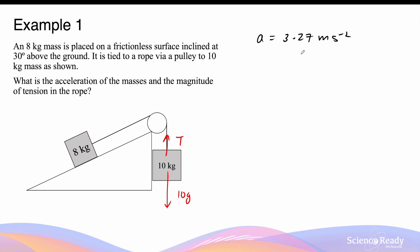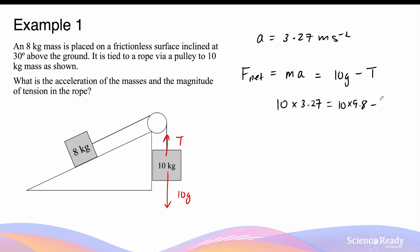Now that we found the acceleration, we can use this number and the force vectors acting on the 10kg mass to find the magnitude of tension. The net force acting on the 10kg mass is given by its mass times the acceleration, and it also equals the sum of these two vectors, which is 10g minus tension. The mass here is 10kg and the acceleration is 3.27 m/s², and this equals 10 times 9.8 minus tension. We can then find tension by rearranging this equation, and the value of tension is 65.3 newtons.